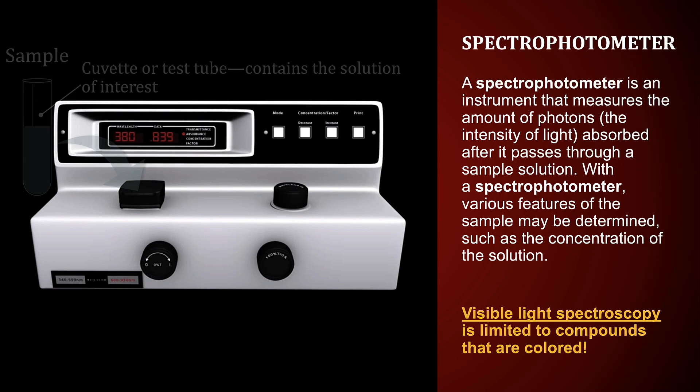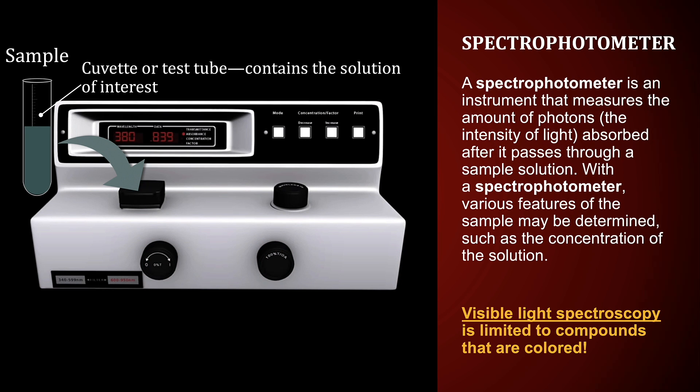A spectrophotometer is an instrument that measures the amount of photons — the intensity of light absorbed — as it passes through a sample solution. With a spectrophotometer, various features of the sample may be determined, such as the concentration of the solution. It must be pointed out that visible light spectrophotometers are only useful for analyzing solutions that are colored.